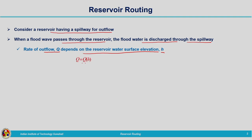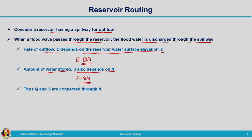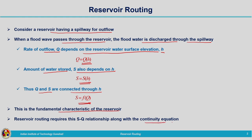The rate of outflow Q depends on the reservoir water surface elevation h, so we write Q as a function of h. The storage S in the reservoir also depends on h — as h changes, storage increases or decreases — so S = S(h). Since both Q and S are functions of h, we can conclude that S is a function of Q. This relationship S = f(Q) is the fundamental characteristic used for reservoir routing along with the continuity equation.